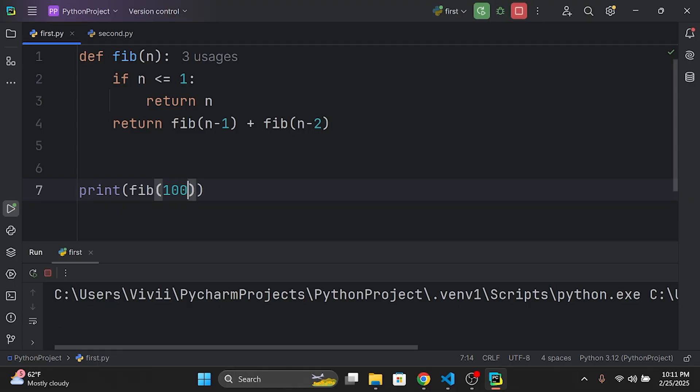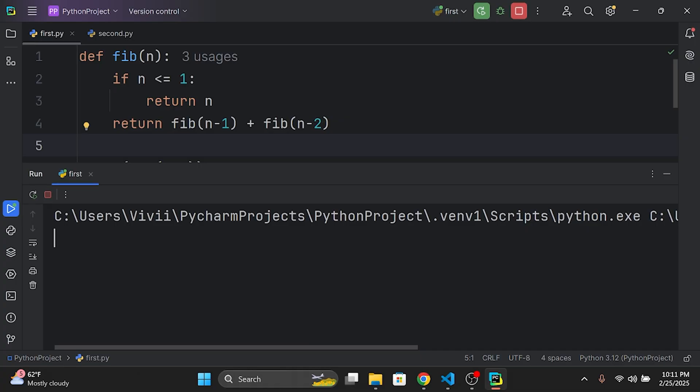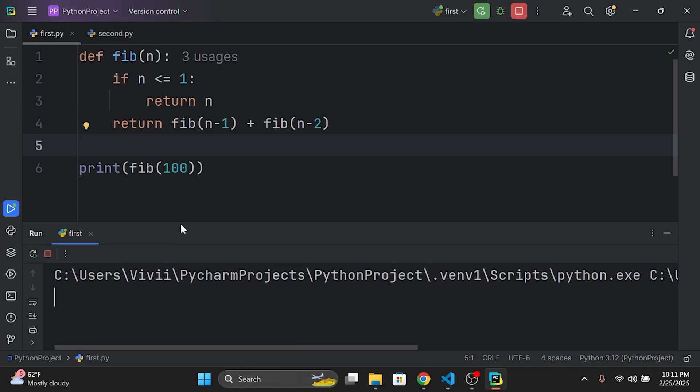But for larger values like n equals 100, the execution takes an extremely long time. In my case, I had to stop the program because it wasn't finishing. The question is, why does it happen?